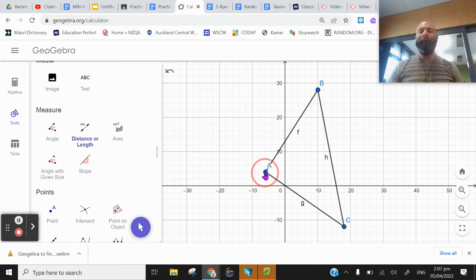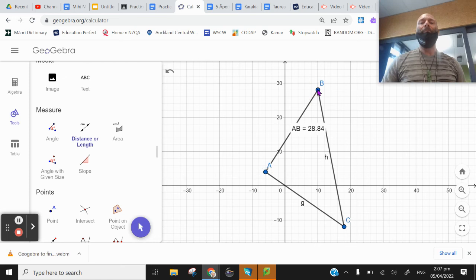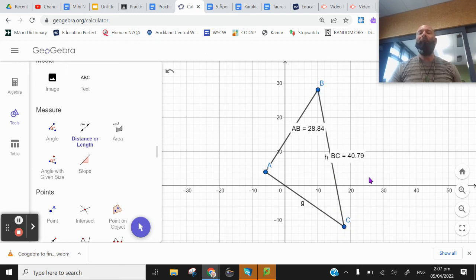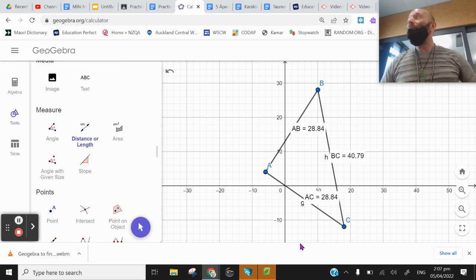I click on A, I click on B. I know that length of AB is 28.84. I'm going to do the same thing between B and C. That has a length of 40.79. Click on A. Click on C. 28.84.